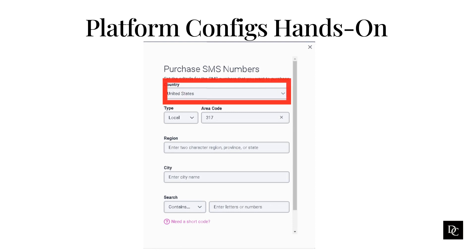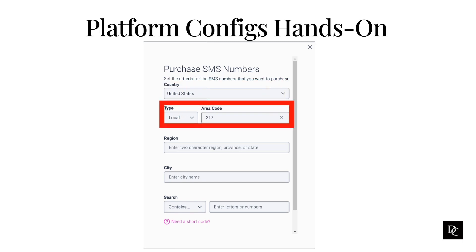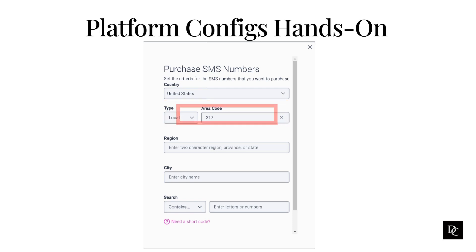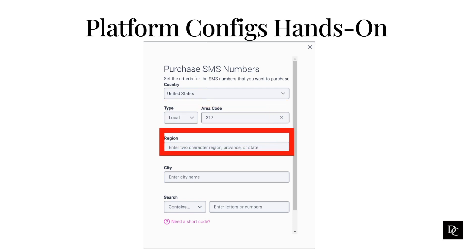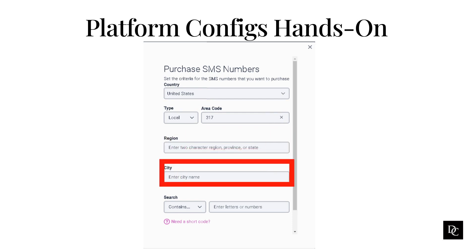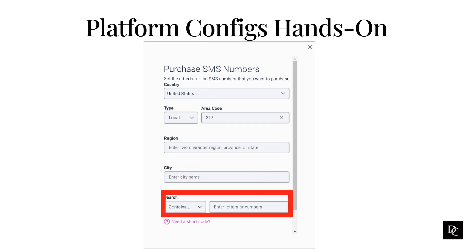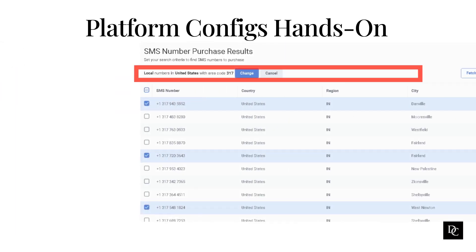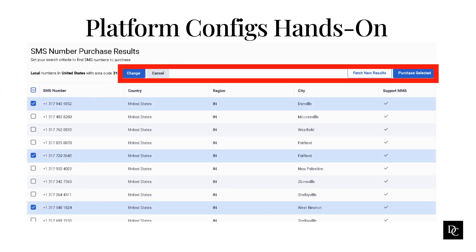Select the country in which you use the SMS number. Select between local, mobile, or toll-free. Enter the area code of the number to purchase. Enter two characters that identify the region, province, or state in which to use the SMS number. Enter the name of the city in which to use the SMS number. Under Search, enter any specific numbers or letters you want your SMS number to have. Click Search. To view the available numbers on the Search Results page, click Search.